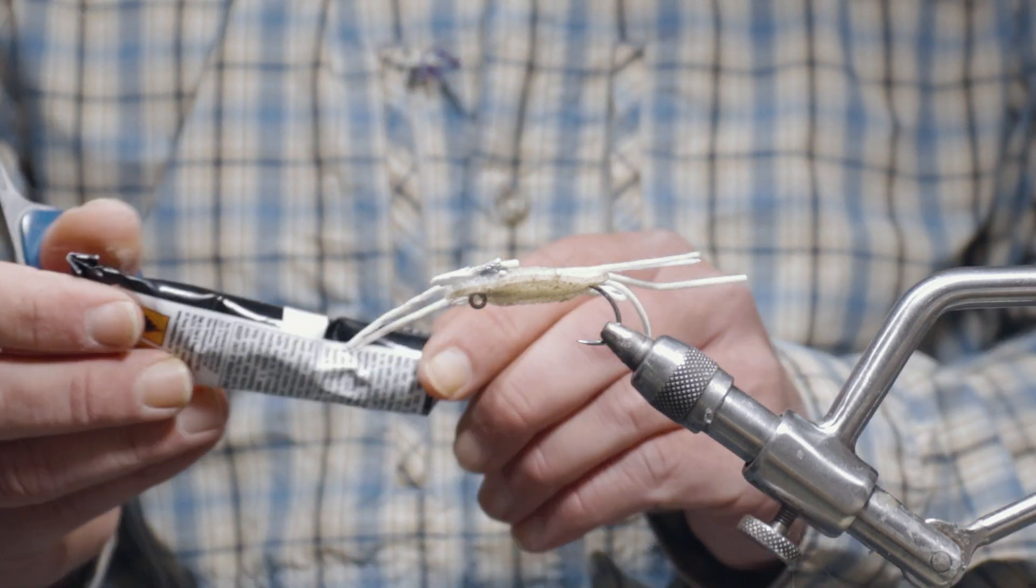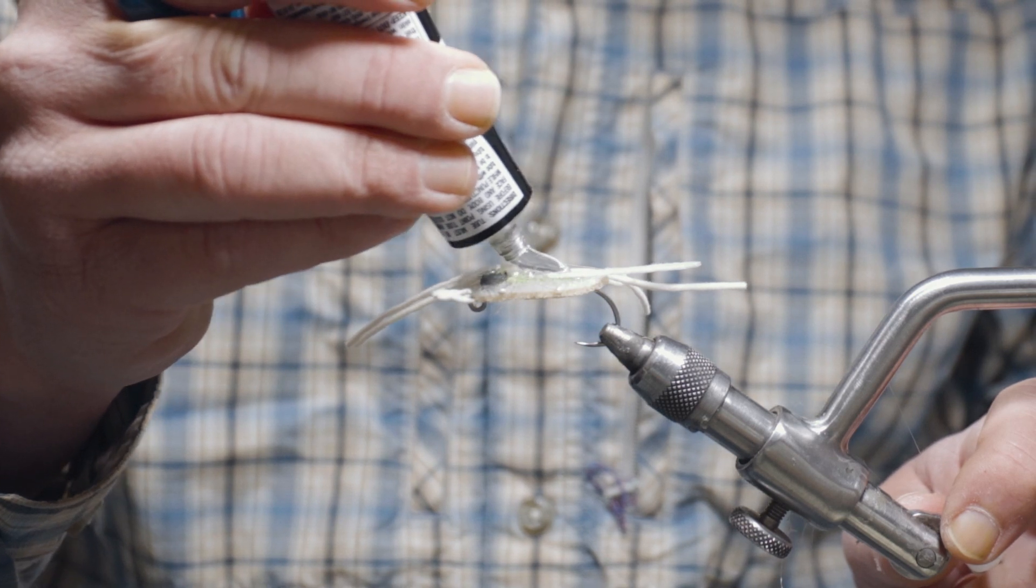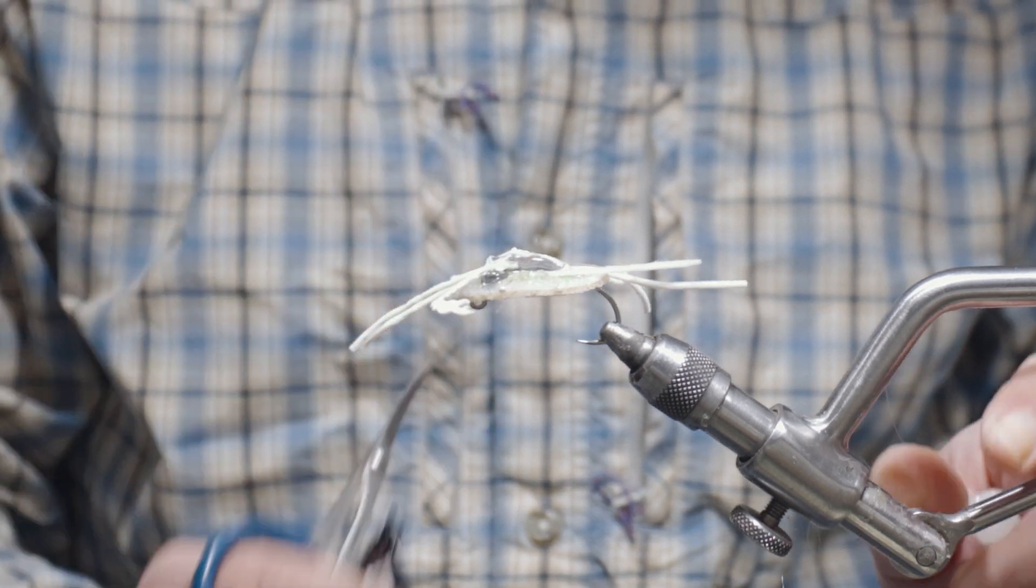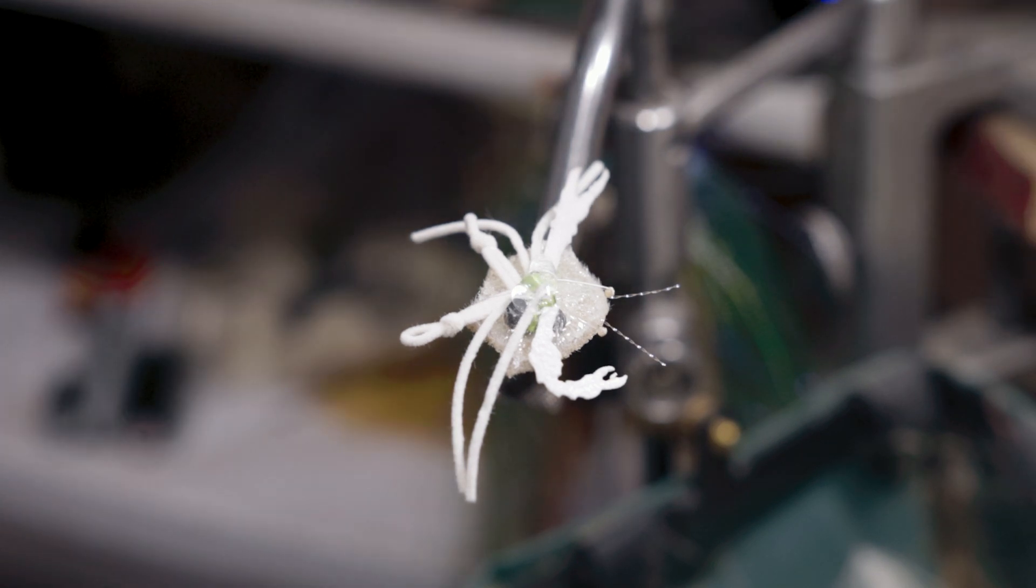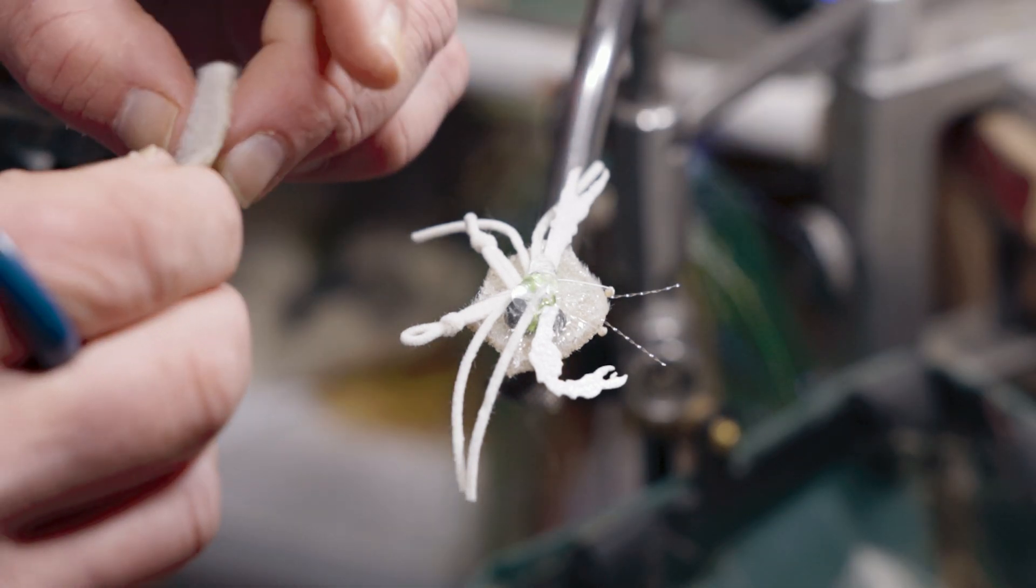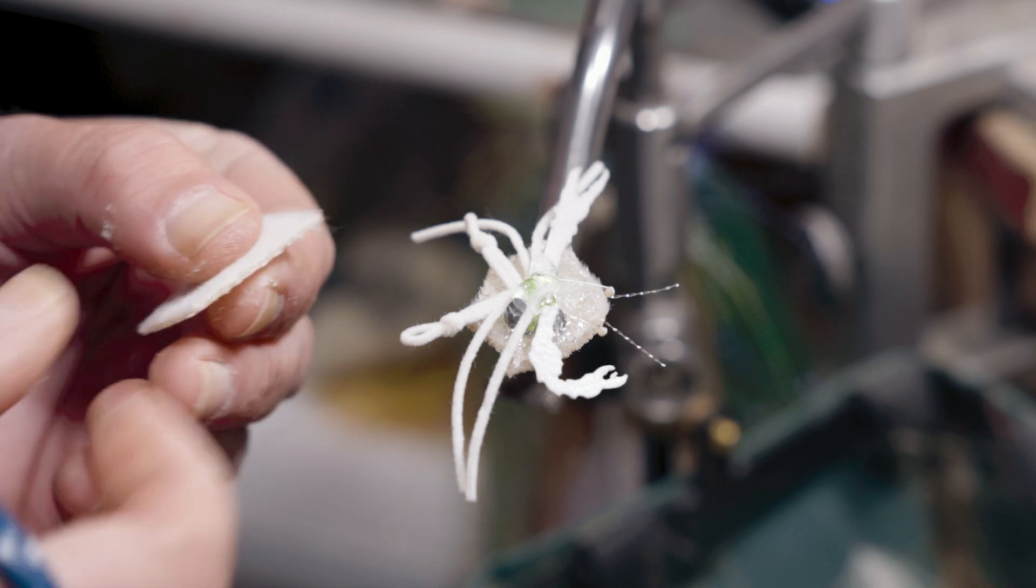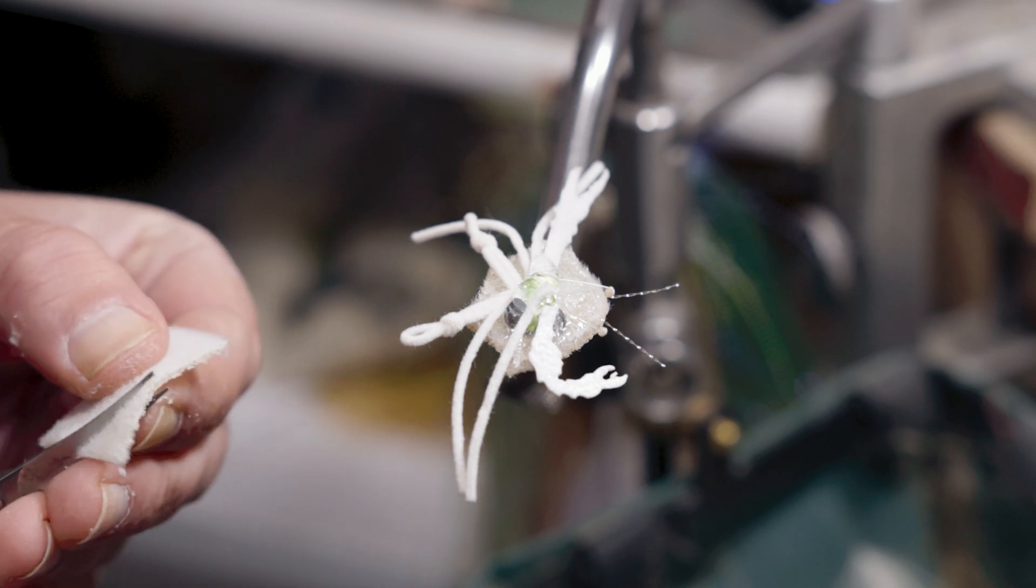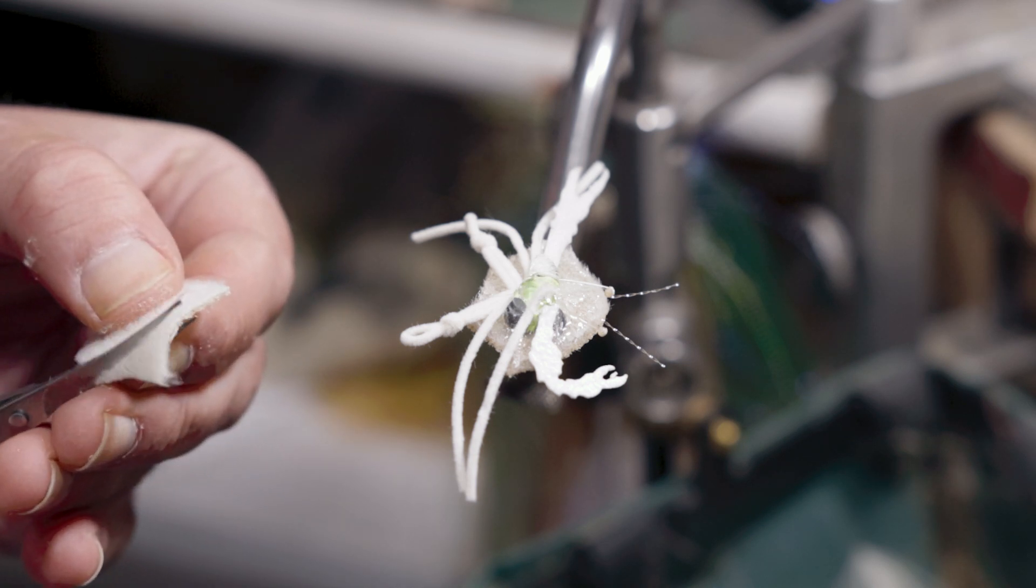And we're going to take another bead of Zap Goo. And then we're going to take another piece of furry foam about approximately the same shape as the top of the crab, just a little bit smaller, and kind of take the corners off.